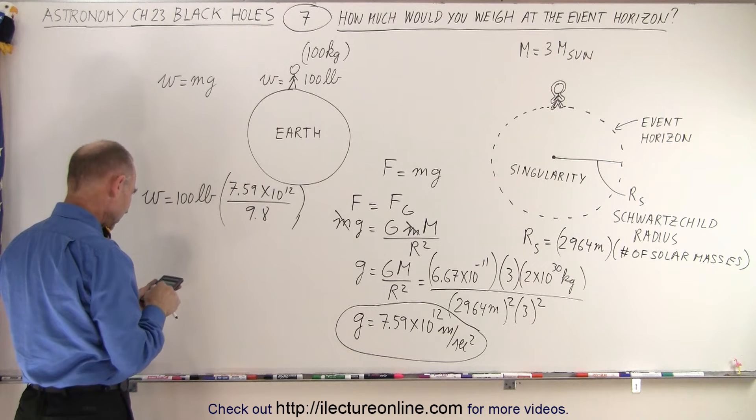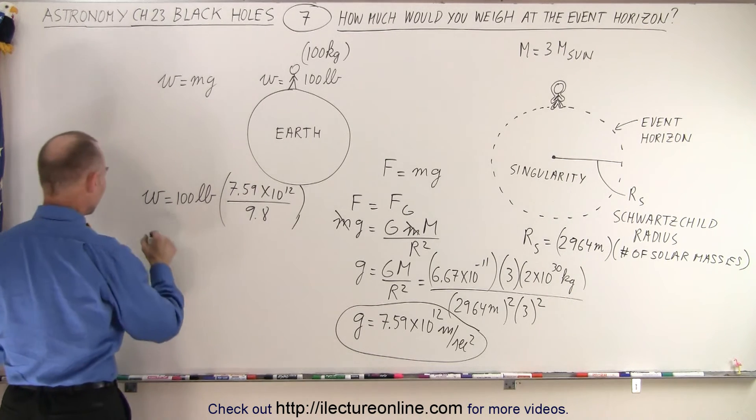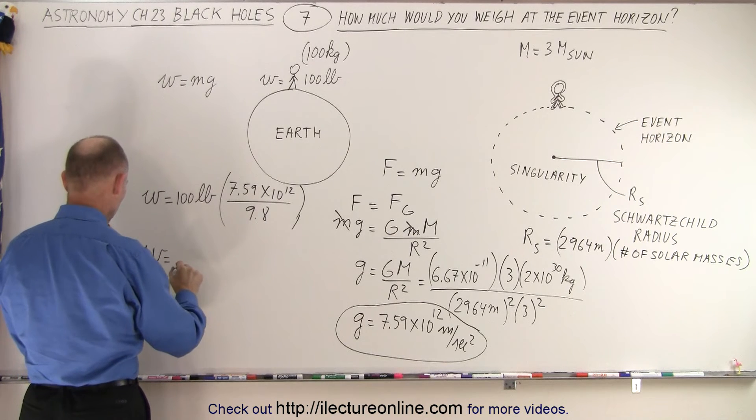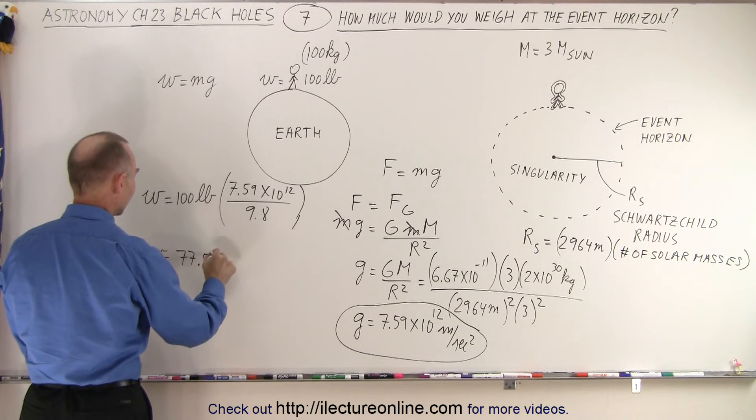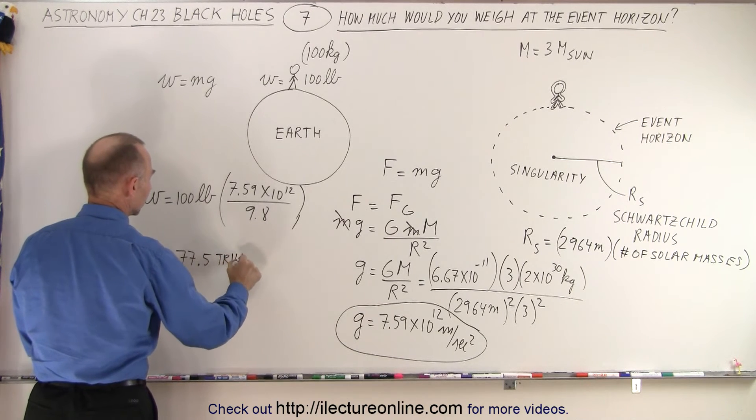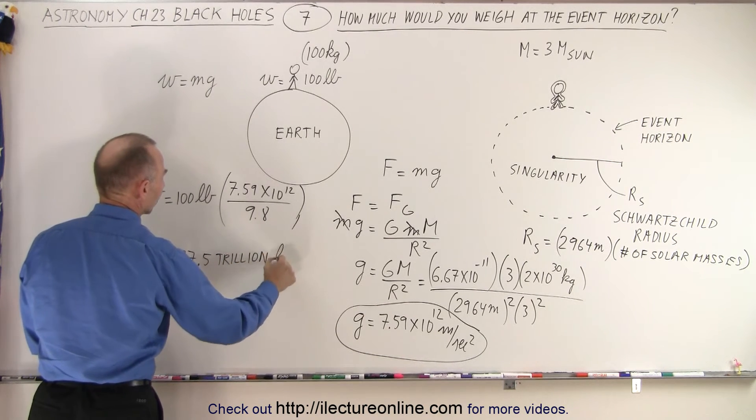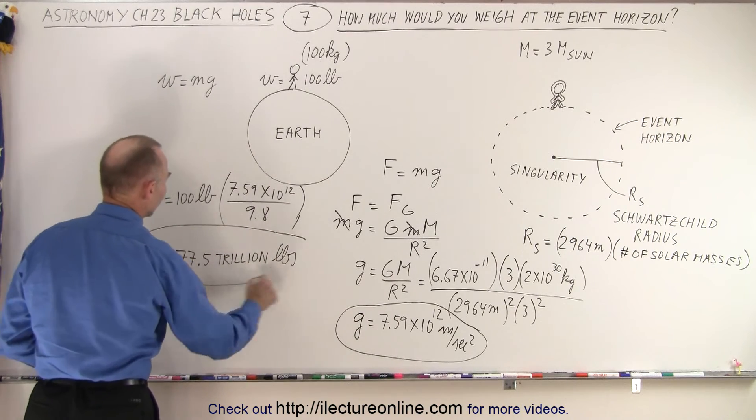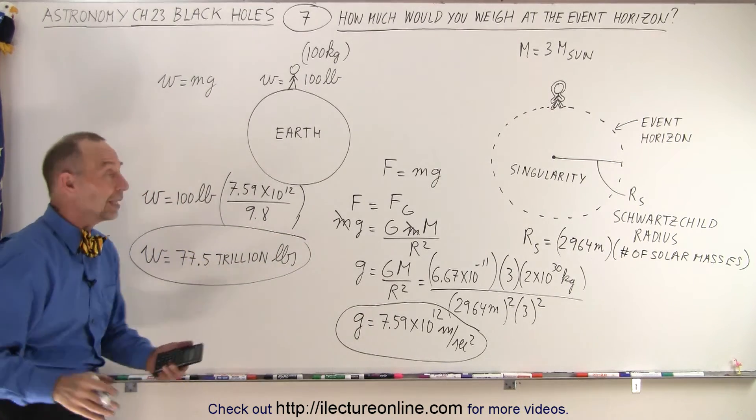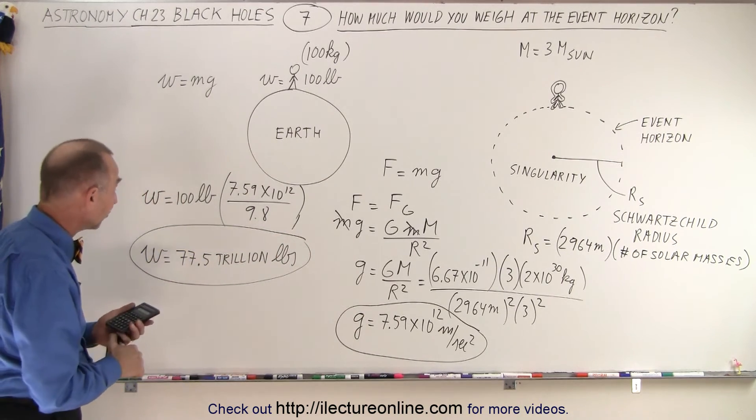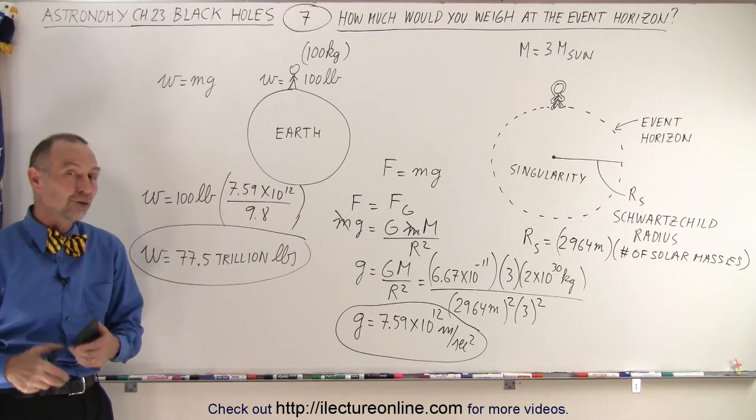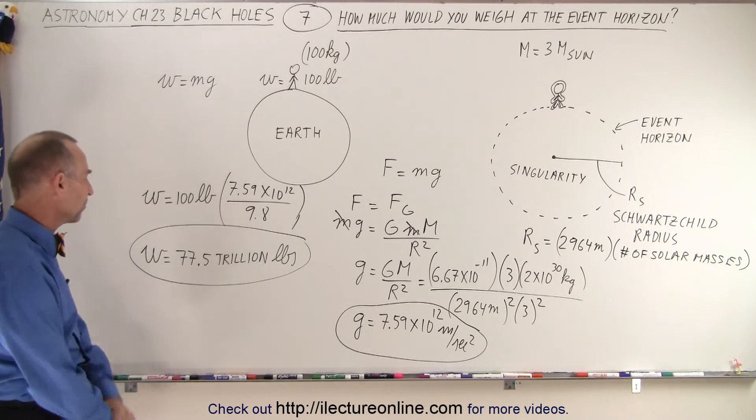So we take that, divide by 9.8, and multiply times 100, and that gives us your weight would then be equal to 77.5 trillion pounds. Or if you like kilograms better, you would weigh as if you had a mass of 77.5 trillion kilograms. That's another way of putting it.